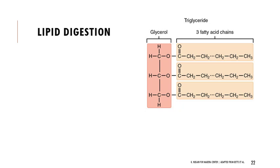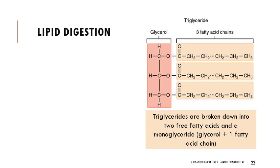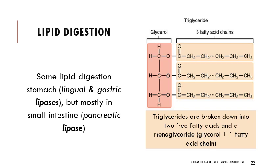Lipid digestion involves breaking apart the triglyceride molecule — one glycerol and three fatty acid chains. When digested, two free fatty acid chains pop off and the glycerol remains attached to one fatty acid, forming a monoglyceride. So lipid digestion produces two free fatty acids and one monoglyceride. Some digestion happens in the stomach via lingual and gastric lipases, but most lipid digestion occurs in the small intestine from pancreatic lipase secreted by the pancreas.